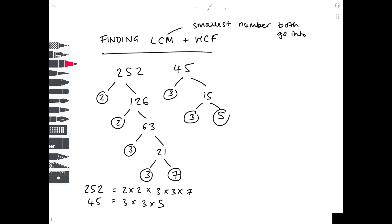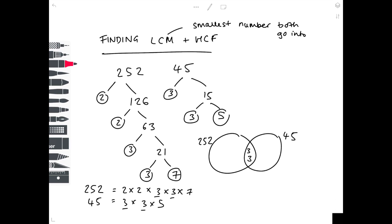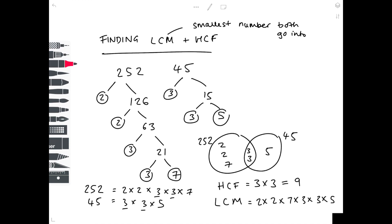Now we find the lowest common multiple and highest common factor using a Venn diagram. We draw two circles and write the numbers on the edge. Looking at the prime factors, we have a 3 in both lists — two 3s go in the middle overlapping region. The remaining numbers — 2, 2, and 7 for 252, and 5 for 45 — go in the outer parts. For the highest common factor, take the overlapping region: 3 × 3 = 9. For the lowest common multiple, multiply all numbers in the Venn diagram: 2 × 2 × 7 × 3 × 3 × 5 = 1260, which is the smallest number that both 252 and 45 go into.